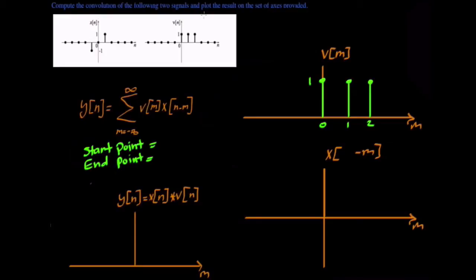Hello, we are given this problem which asks us to convolve two discrete signals as shown here. This is the definition for convolving two discrete time signals. To know which point we start shifting, we choose a start point and an end point.